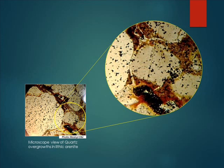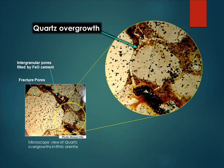This is another related feature typical of stressed regimes. Here is a picture of quartz overgrowth in lithic arenites, also from one of the inland basins in Nigeria. We also see other indications of inter-granular pores filled by iron oxide cements, and some breakage of the grains to form fracture pores.